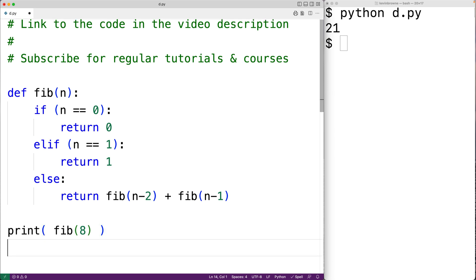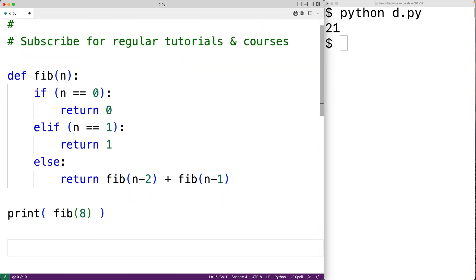We could use a loop to calculate the sequence up until some term. So for example, we could have for n in range 0 to 16 to calculate the first 16 terms in the sequence.